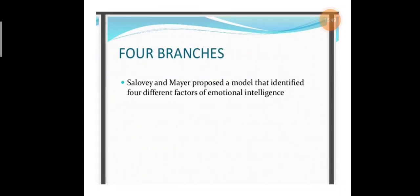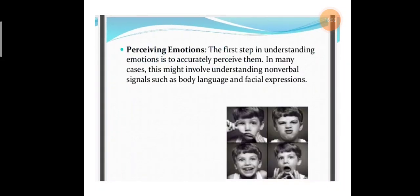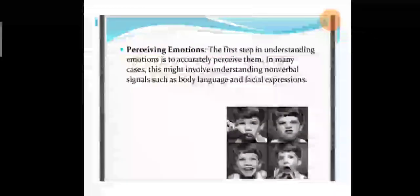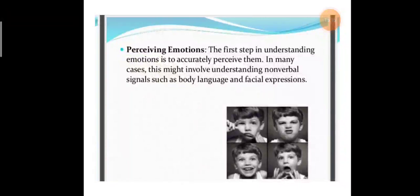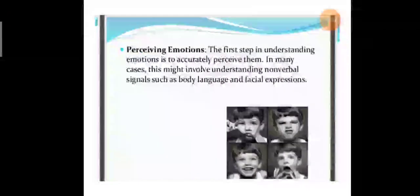Emotions 4 Branches - Salovey and Mayer proposed a model that identified four different factors of emotional intelligence. First is Perceiving Emotions. The first step in understanding emotions is to accurately perceive them. In many cases, this might involve understanding nonverbal signals such as body language and facial expressions.